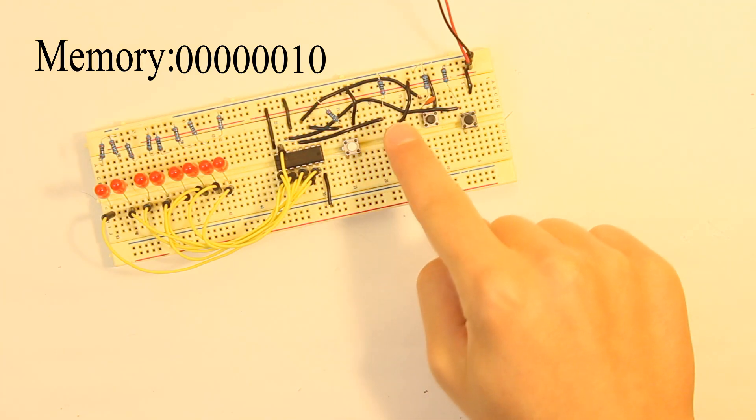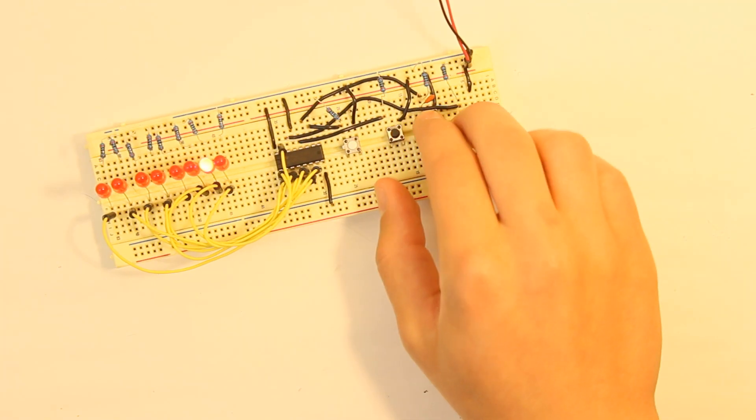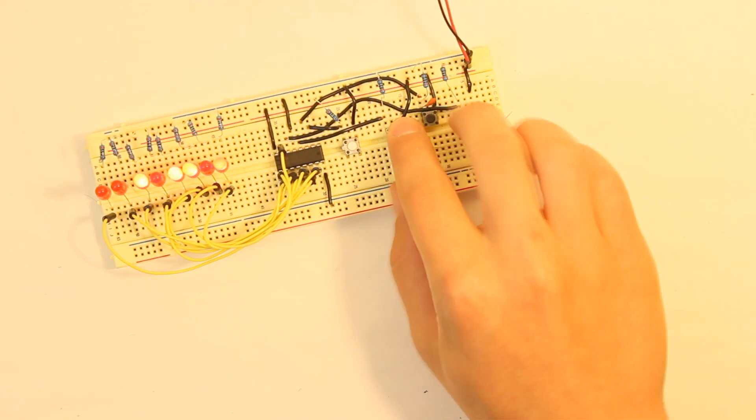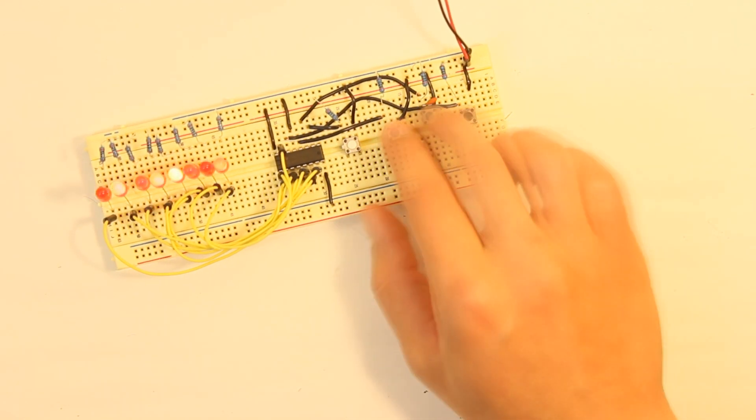Now, I will push the output clock button and the LEDs will light up according to what is in memory. So, it will be 00000010. Remember that memory is not cleared when it is copied to the output. This means that you can keep shifting in new bits and produce a cool scrolling effect if you keep pressing the output clock button.